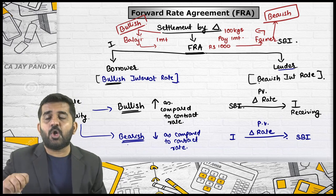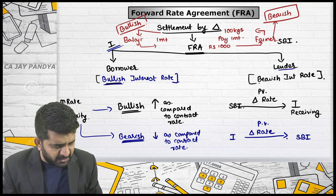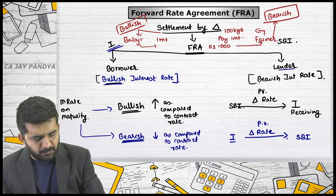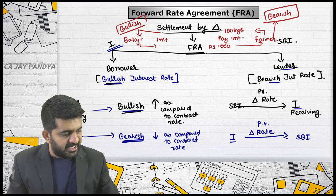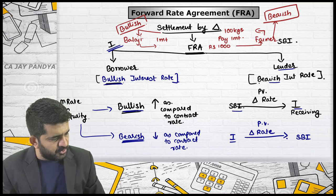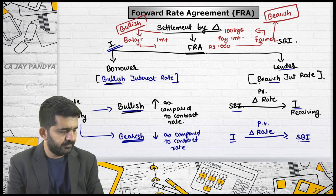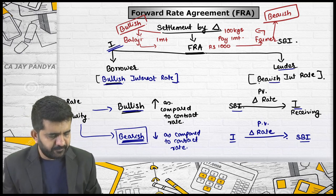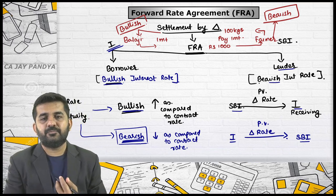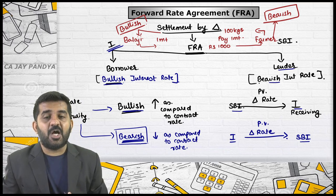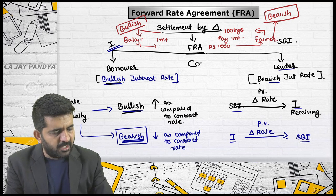Summary of FRA settlement: if I was bullish and market is bullish, I receive. If I was bullish and market is bearish, I pay. SBI is bearish — if market is bullish, SBI pays; if market is bearish, SBI receives. A student asks: if market is bearish, can I not exercise? No — this is a compulsory contract like forward and futures, not an option contract.